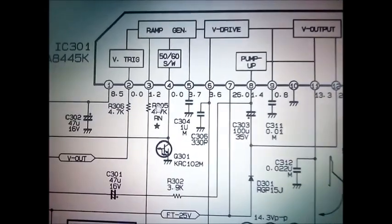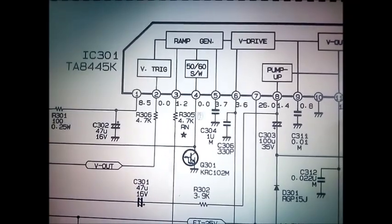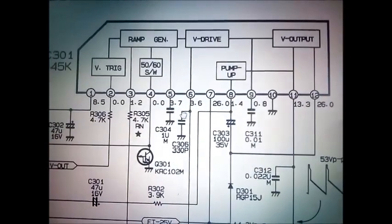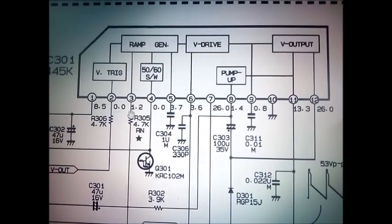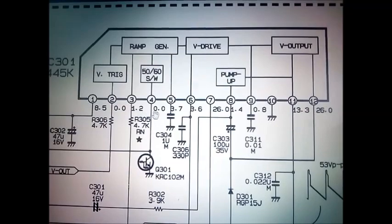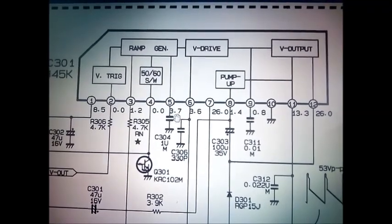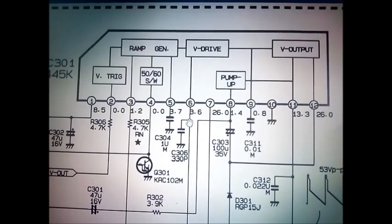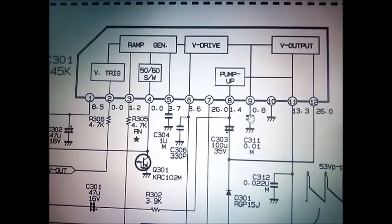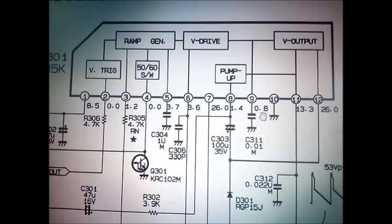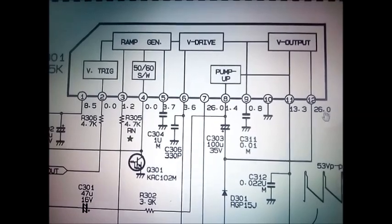This is the vertical IC number TA845K. Check these pins: pin 1 is 8.5V, pin 2 is 0V, pin 3 is 1.2V, pin 4 is 0V, pin 5 is 3.7V, pin 6 is 3.6V, pin 7 is 26V, pin 8 is 1.4V, pin 9 is 0.8V, pin 10 is ground, pin 11 is 13.3V, pin 12 is 26V.